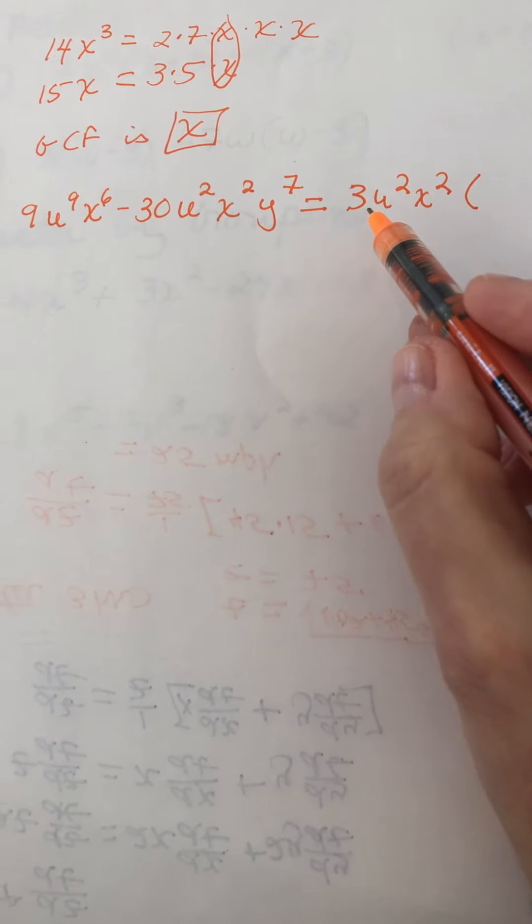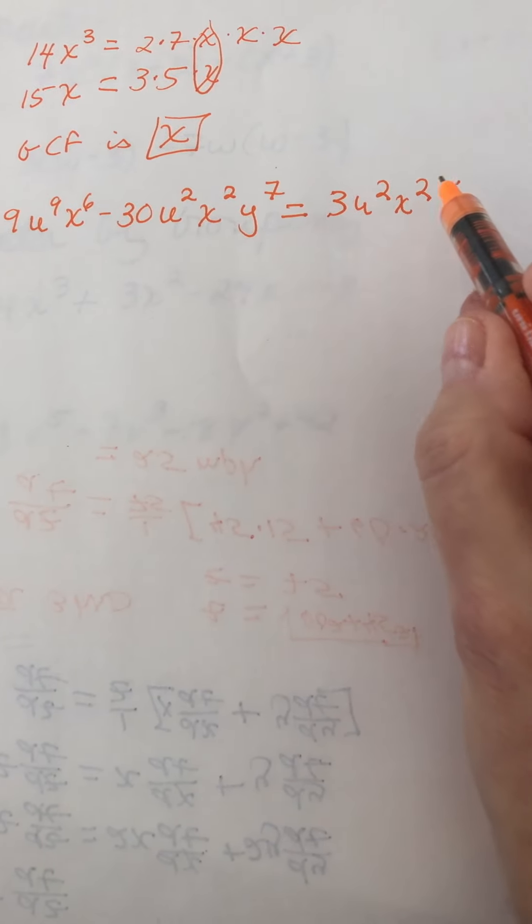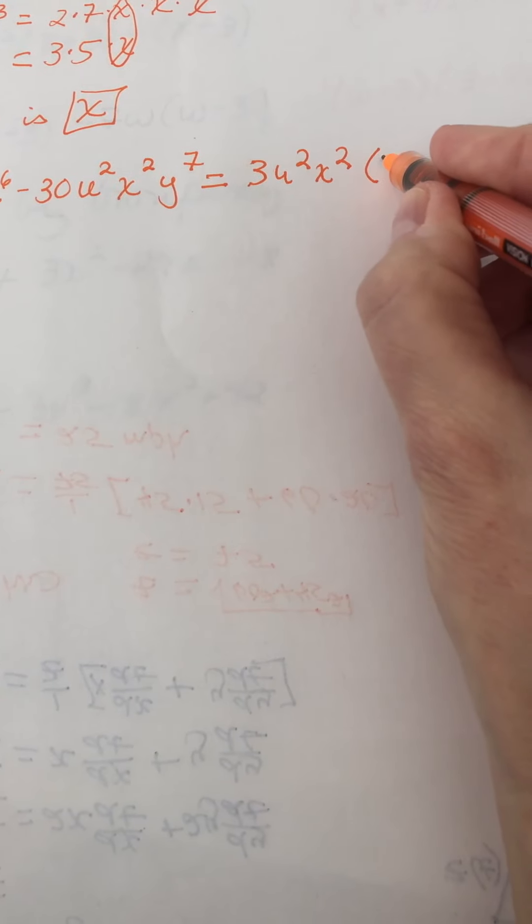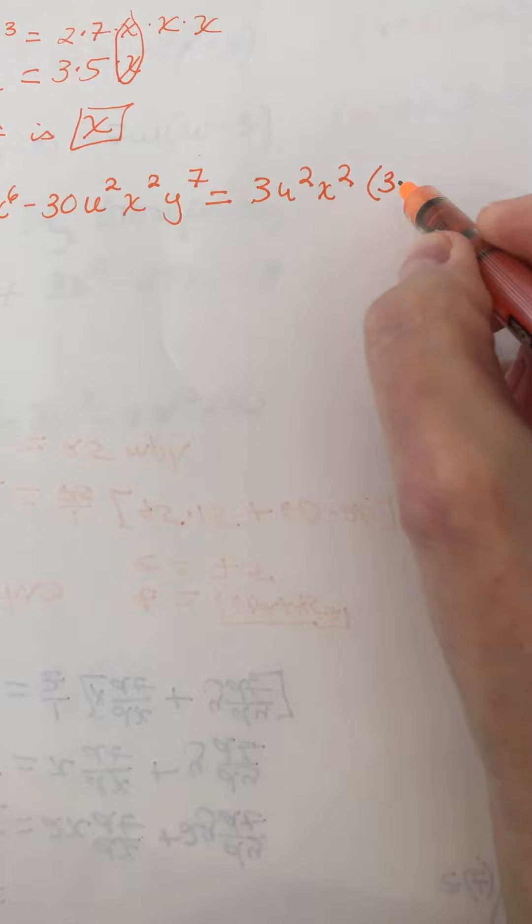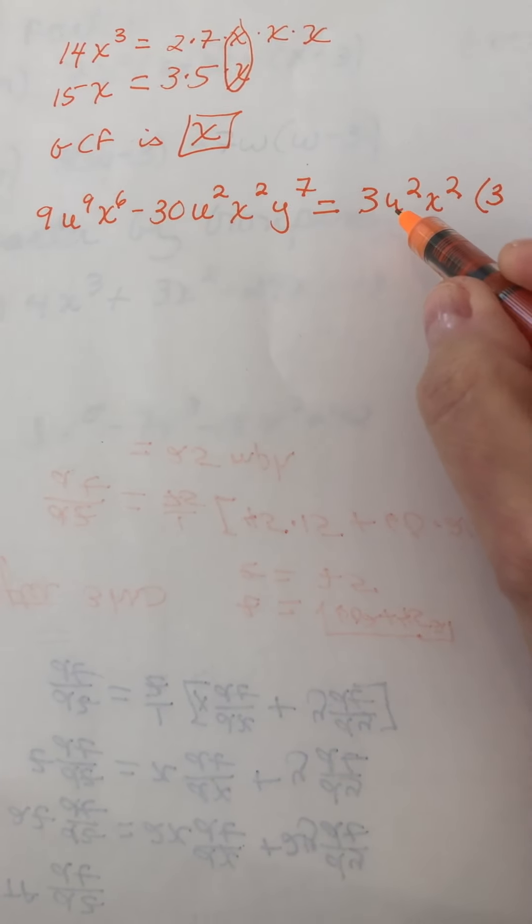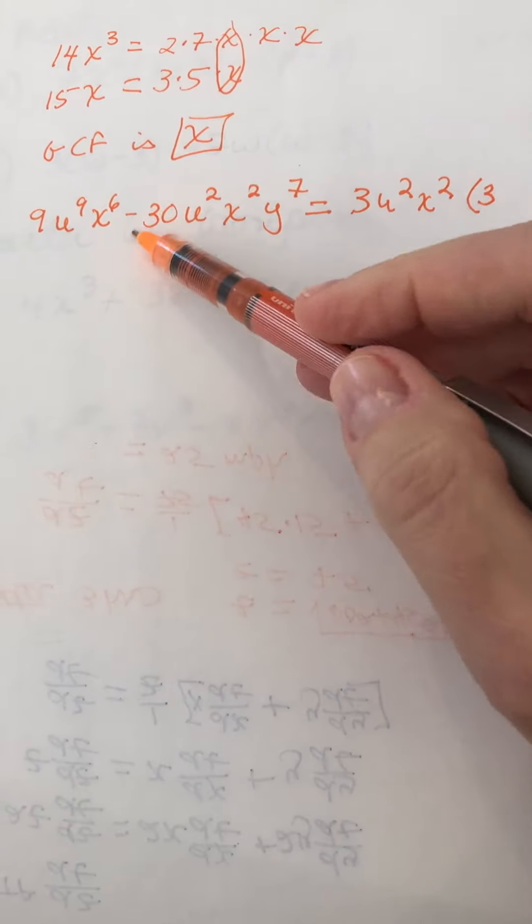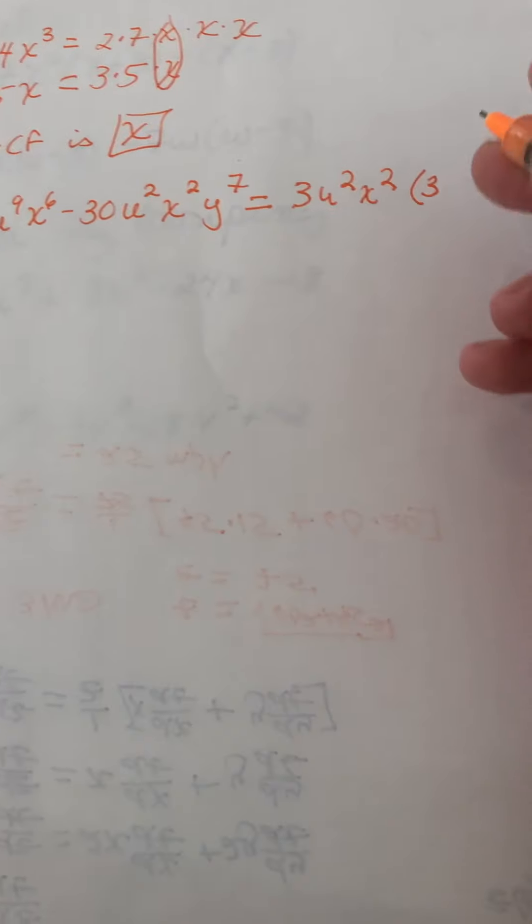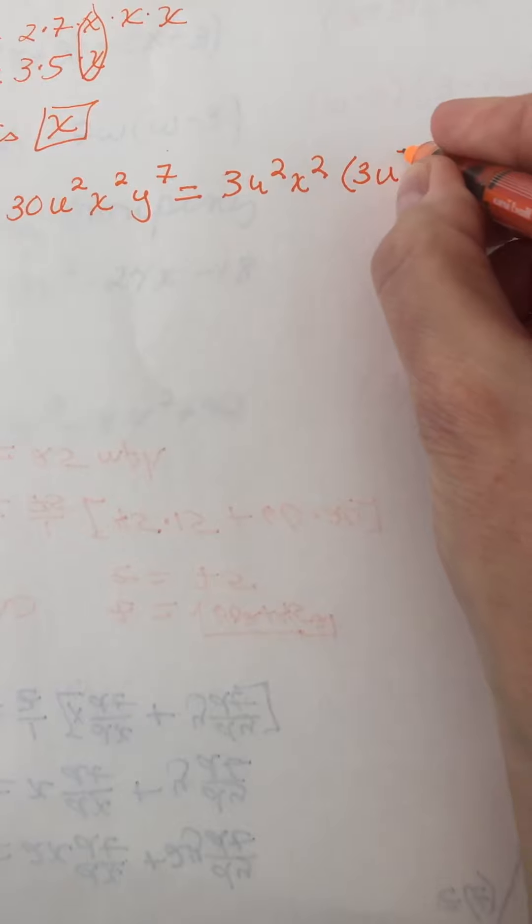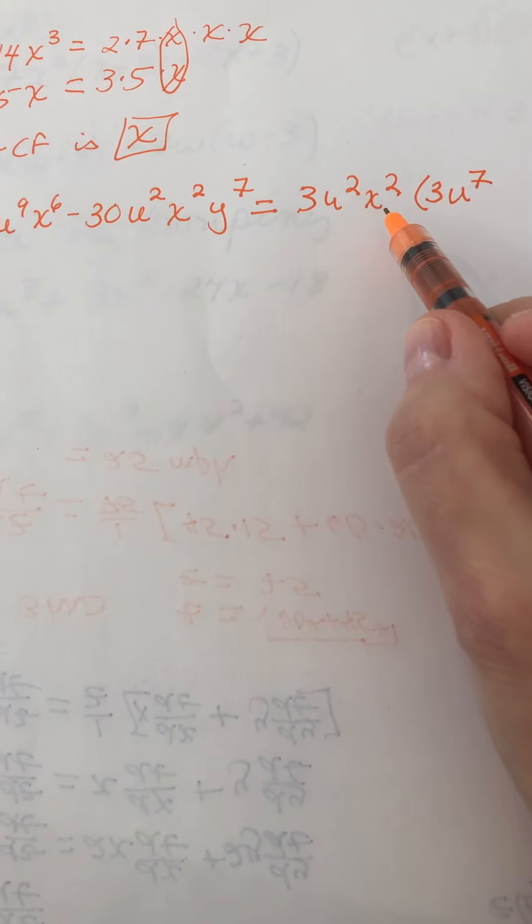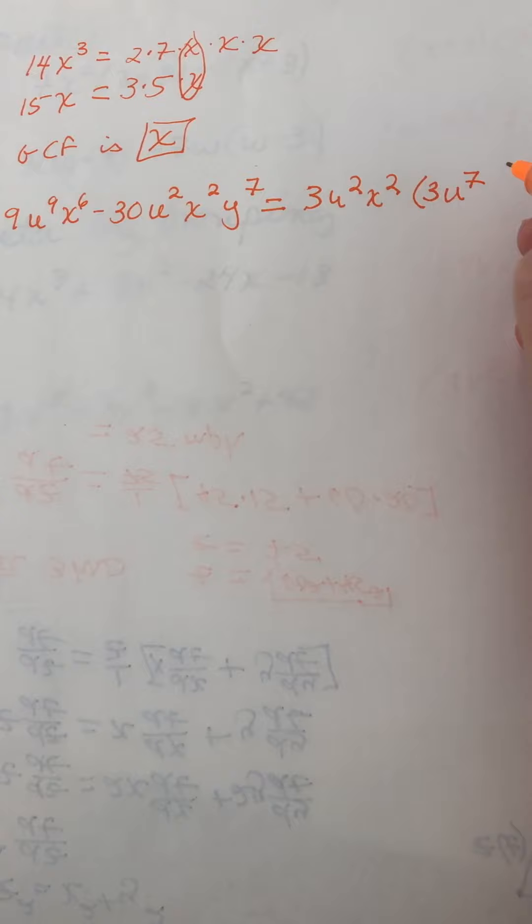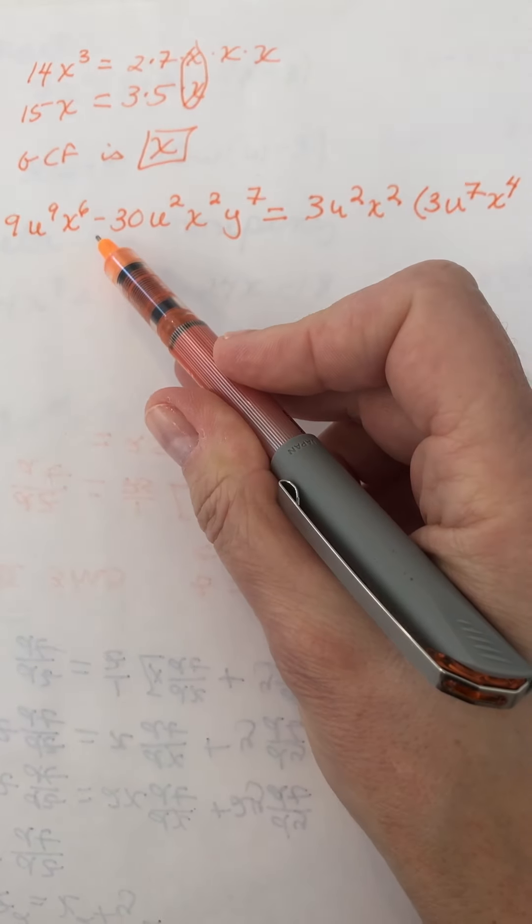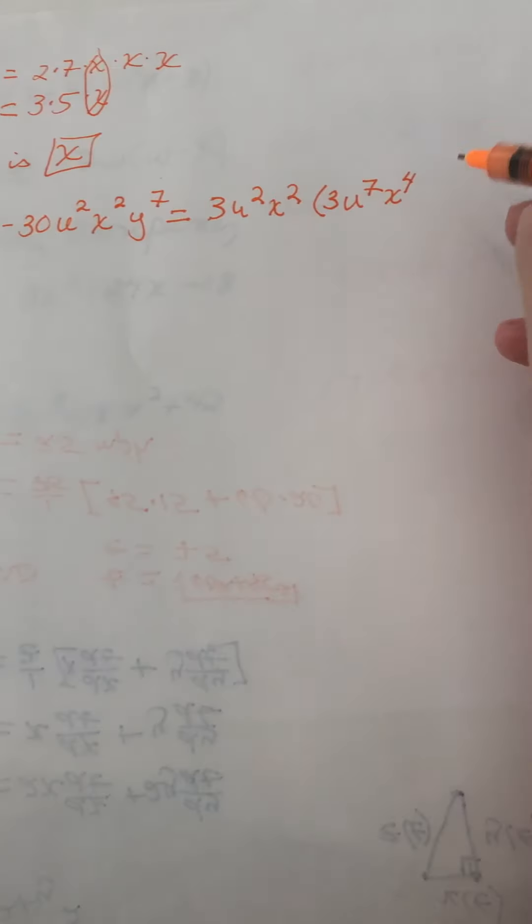So again, we want to think about 3 times what would give us the 9 here, and it would be 3 times 3 gives us 9. Then u squared times u to the 7th gives us 9 factors, and x squared times x to the 4th gives us the x to the 6th. And then there's a minus sign.